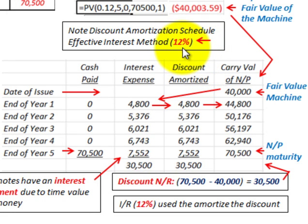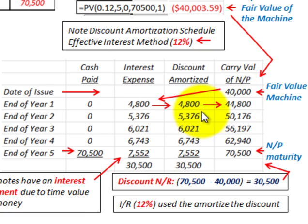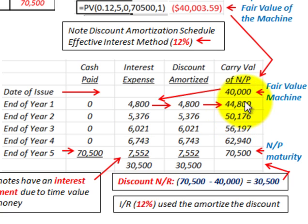Our carrying value at the date of issue is forty thousand dollars. At the end of year one, interest expense is forty thousand times twelve percent, or four thousand eight hundred dollars. For this zero interest bearing note with a single payment, the discount amortized equals the interest expense. Adding four thousand eight hundred dollars to the beginning carrying value of forty thousand dollars gives a new carrying value of forty-four thousand eight hundred dollars. At year two, interest expense is twelve percent times forty-four thousand eight hundred, equaling five thousand three hundred seventy-six dollars, bringing the carrying amount to fifty thousand one hundred seventy-six dollars. We continue this amortization until reaching the maturity amount of seventy thousand five hundred dollars at end of year five.